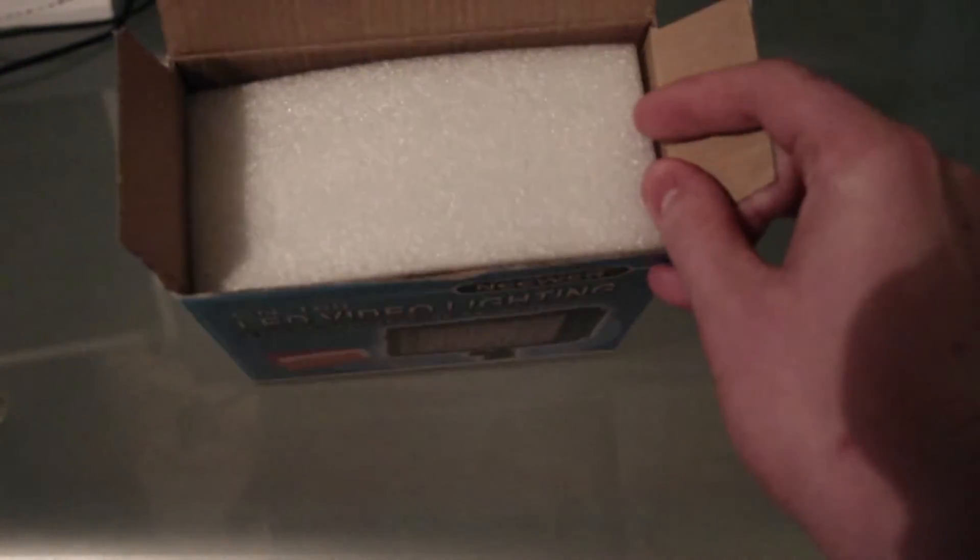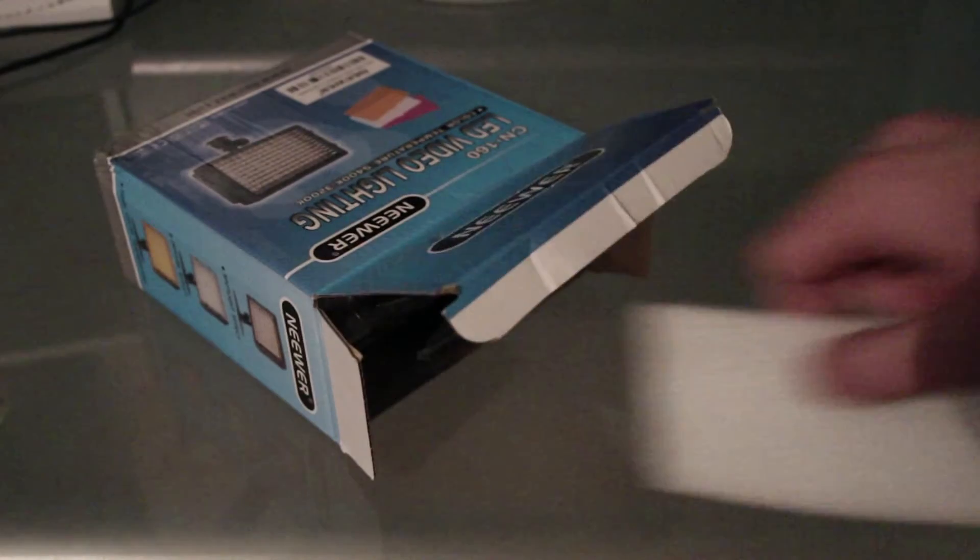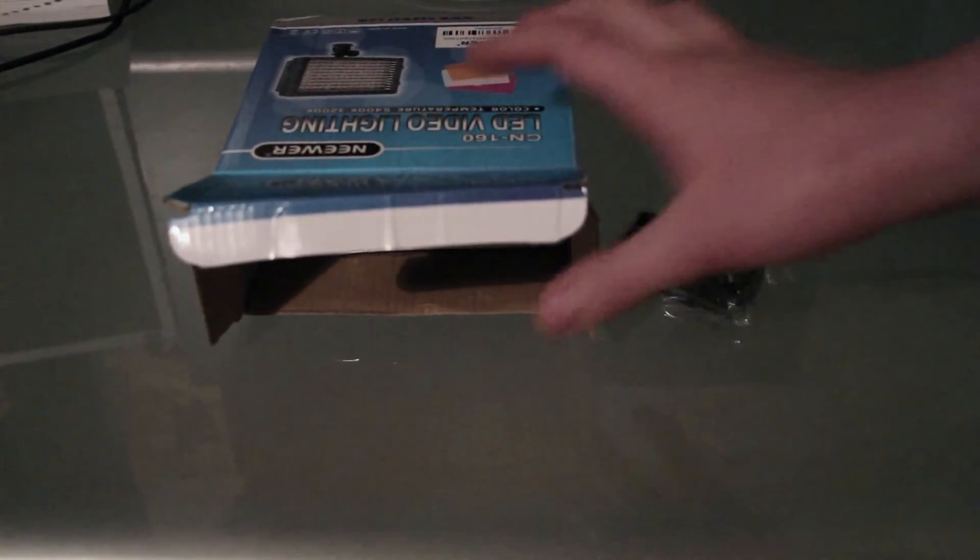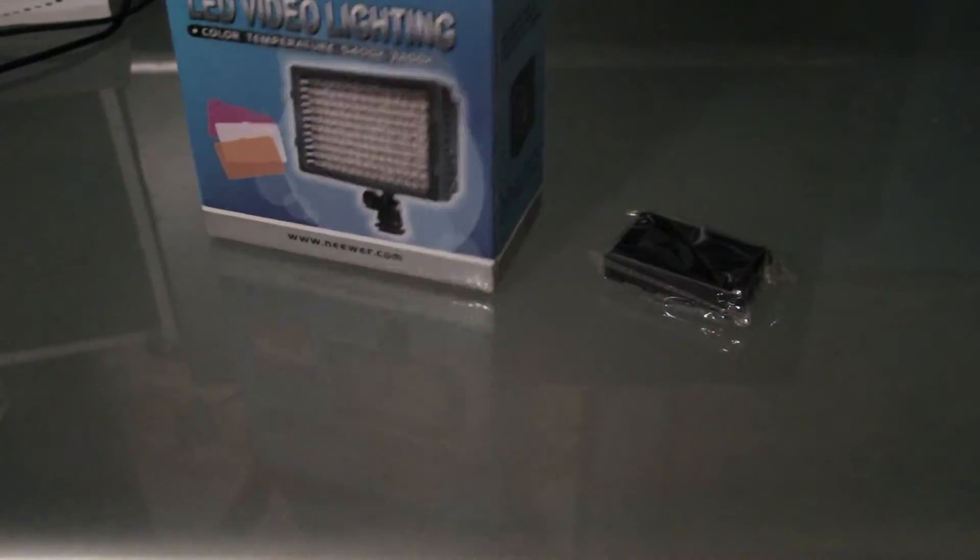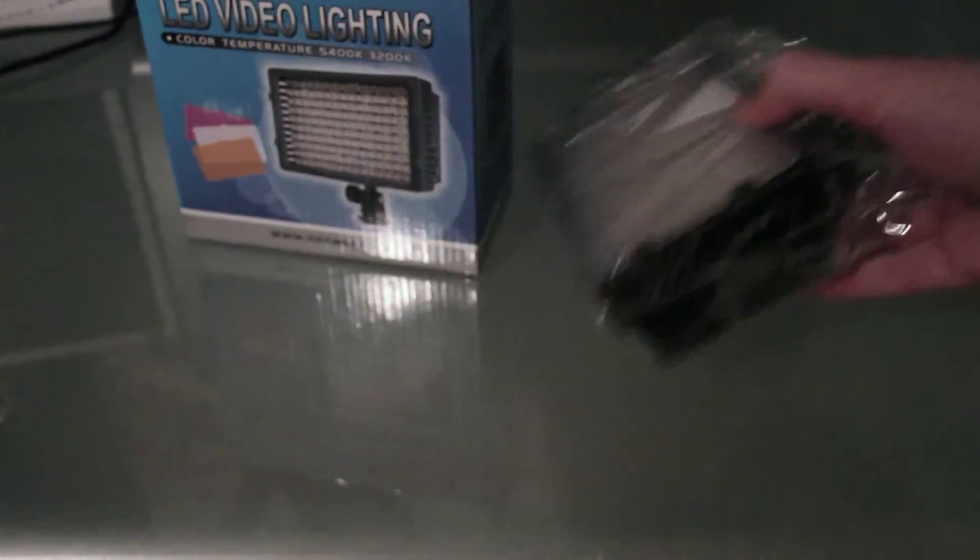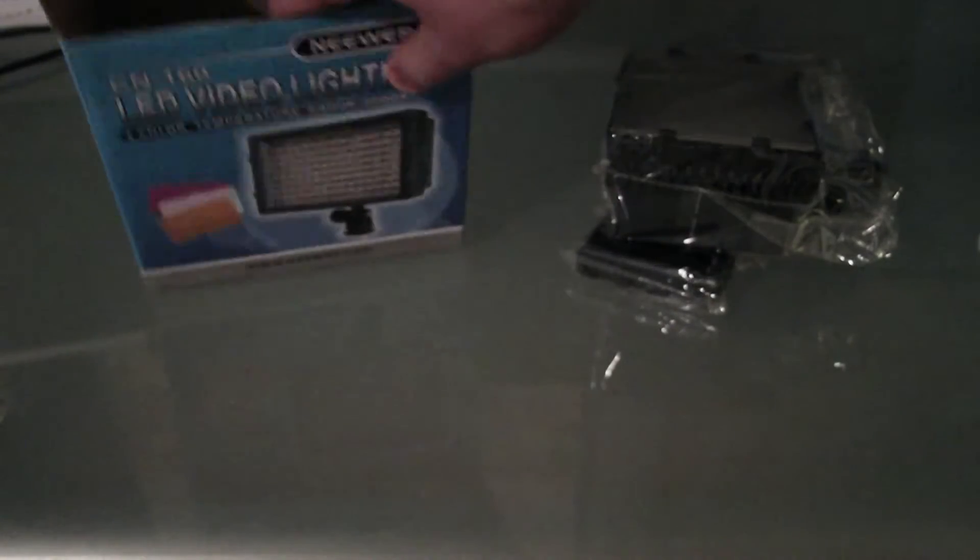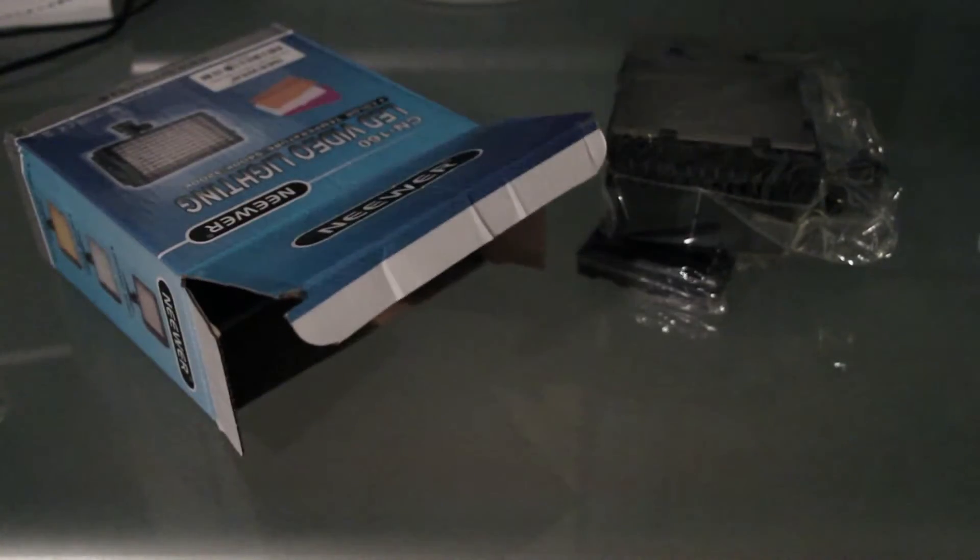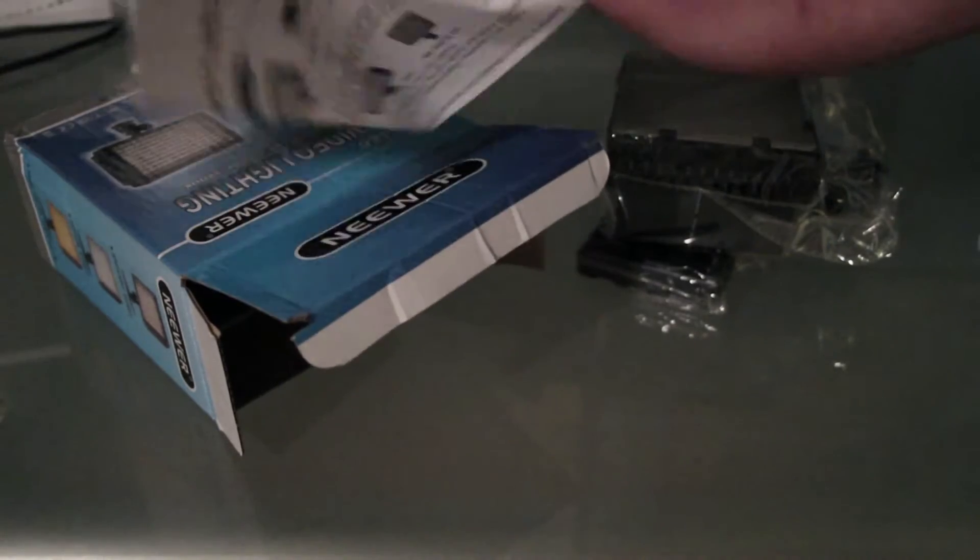Inside you've got a little bit of protective foam, and then some kind of battery holder or something. We'll look at that in a minute. The main event, it's obviously got one of the filters on it. It looks alright. A destruction manual, single sheet.